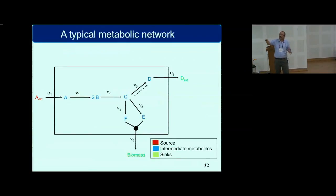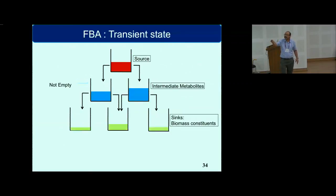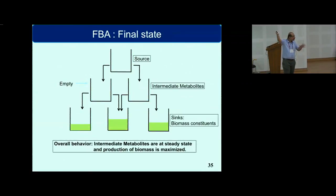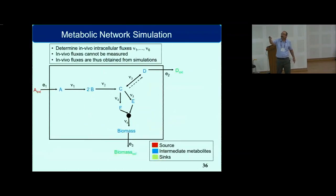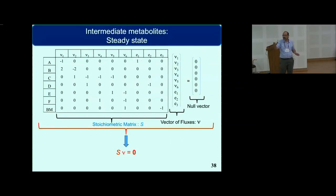When I go to this metabolic network, what I'm essentially seeing is that in FBA, biomass production is maximized. Essentially, all the molecules in the source land up in the biomass constituents. The production of biomass is maximized, and intermediate metabolites stay in steady state. Because the intermediate metabolites stay in steady state, you can write mass balances, and all of them add up to zero. You can represent this in a matrix vector form, S dot nu equals zero, where nu is the vector of fluxes.